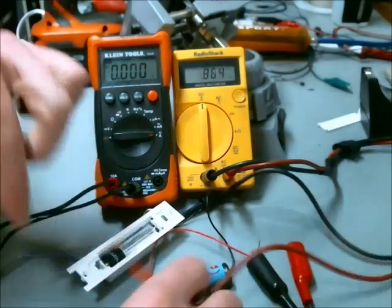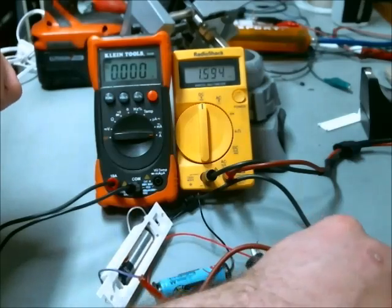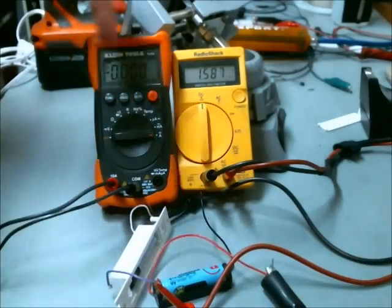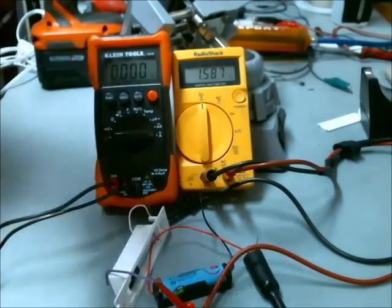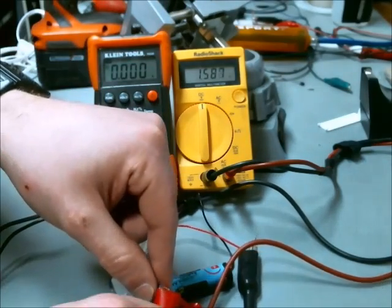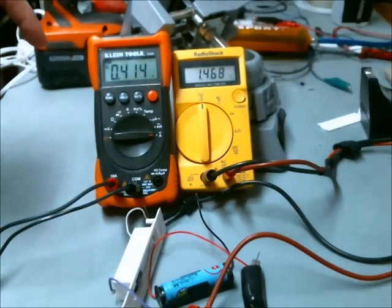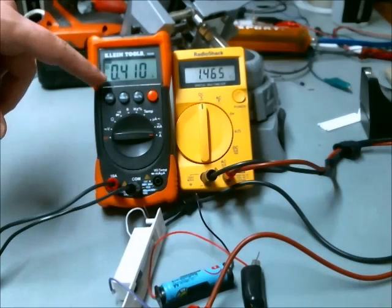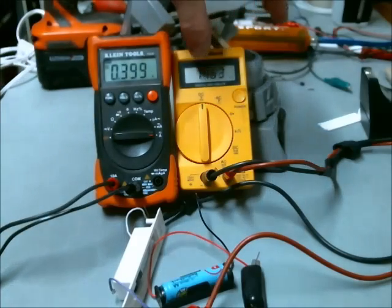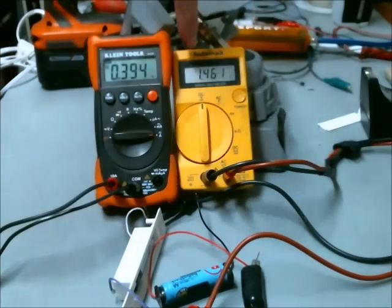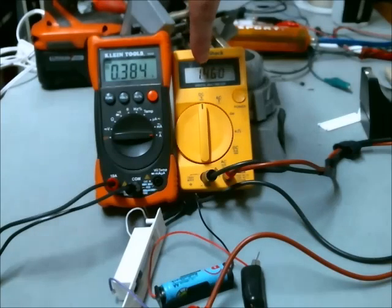All right, now I'm going to connect the two together through the current meter so we can see how much current is running from the higher voltage battery to the lower voltage battery. Okay, so we can see that we're pushing 0.4 amps presently and the voltage has dropped from the 1.588 to 1.46.